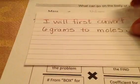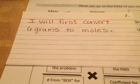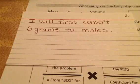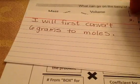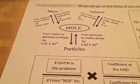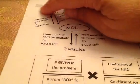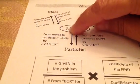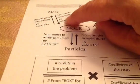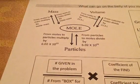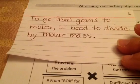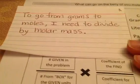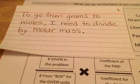I'm going to first convert 6 grams into moles. Let's look at the mole map to see how to convert from 6 grams to moles. To go from grams to moles — from mass to moles — I have to divide by molar mass.